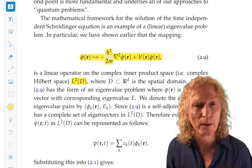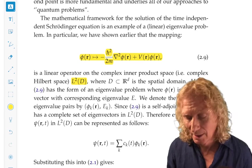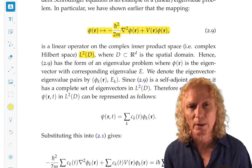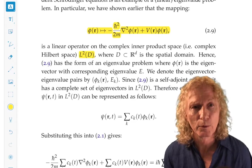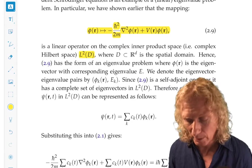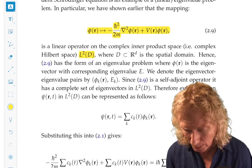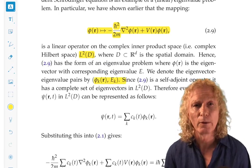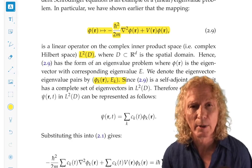That means the eigenvectors span L² of D. Now, we only proved that in finite dimensions. We're going to take it as a fact that it's proved for this particular Hilbert space, L² of D, and we denote the eigenvector-eigenvalue pairs in this way: φₖ(r), Eₖ.